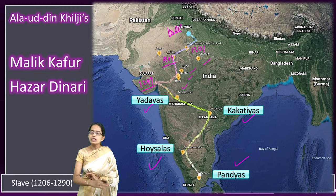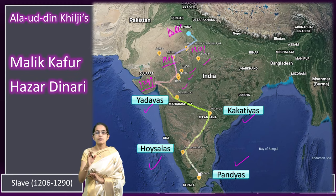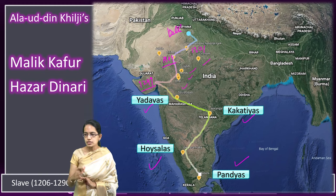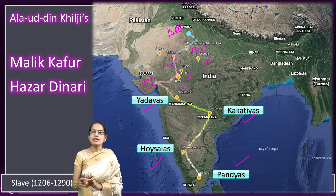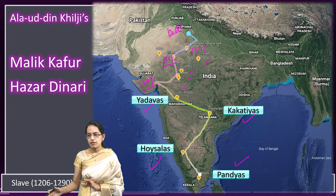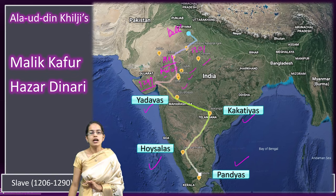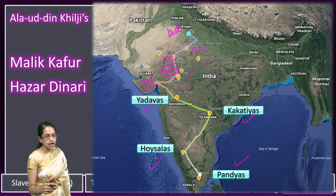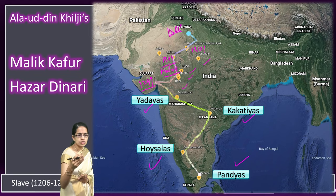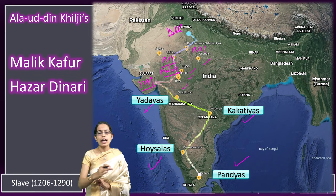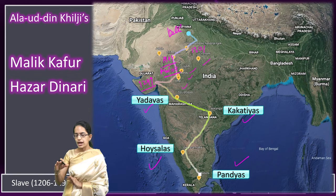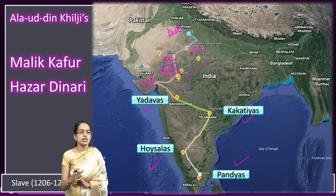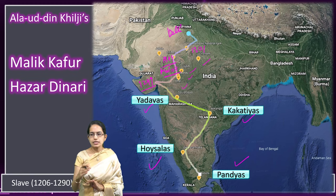The regions of Mandu, Ujjain, Dhar, and Chanderi were all occupied and gradually annexed by Alauddin Khilji under Malik Kafur. All the states of Rajasthan — Ranthambore, Chittor — initially did not submit, but he later conquered the region of Malwa. Once he conquered Malwa, he was considered the real master of North India. Ujjain, Dhar, Chanderi, and Mandu were all occupied as part of his expansion.